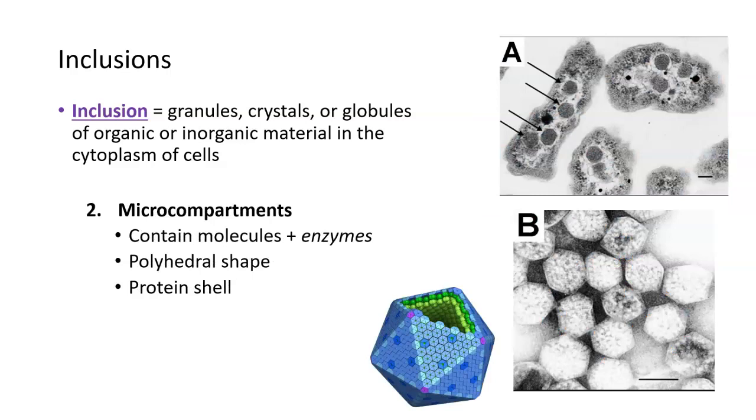There's another type of storage area in bacteria called a microcompartment, which is almost like an organelle in a eukaryotic cell. Microcompartments don't only contain some kind of molecule like a sugar or starch or fat, but they also can contain enzymes that can do stuff with those molecules. They have very specific shapes, like this polyhedron. Microcompartments on the outside are completely composed of proteins. There's a protein shell that wraps around whatever molecule they're storing and the enzymes inside.